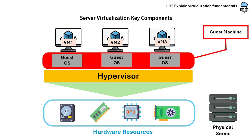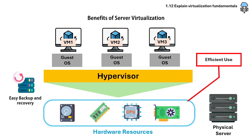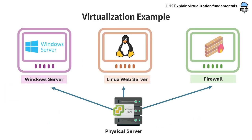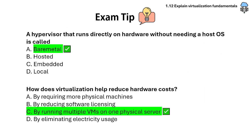There are many benefits to using virtualization, including efficient use of hardware, easy backup and recovery, and scalability and cost savings. A real-world example is a company running a Windows server, a Linux-based web server, and a firewall, all on the same physical server using VMware ESXi. Exam tip: be able to identify hypervisor types and understand how virtualization reduces hardware needs.